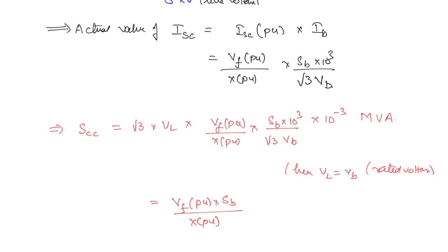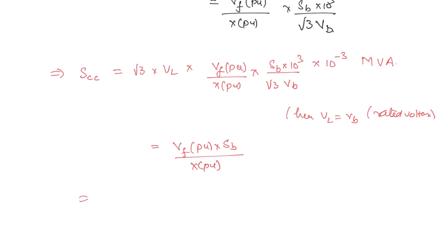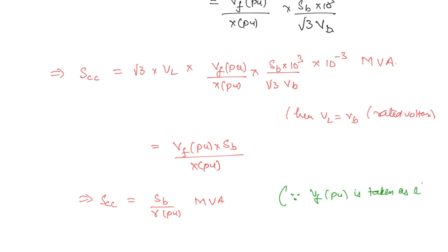Since Vf in per unit is taken as 1, the expression simplifies to: SCC equals SB divided by X per unit, in MVA.